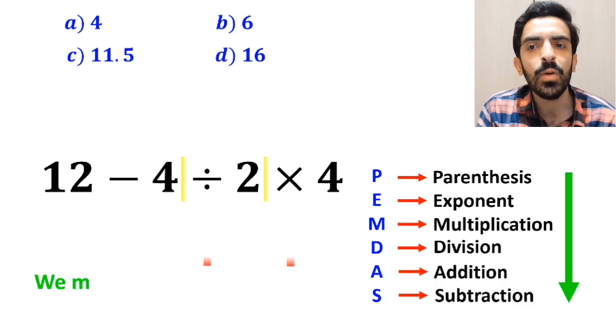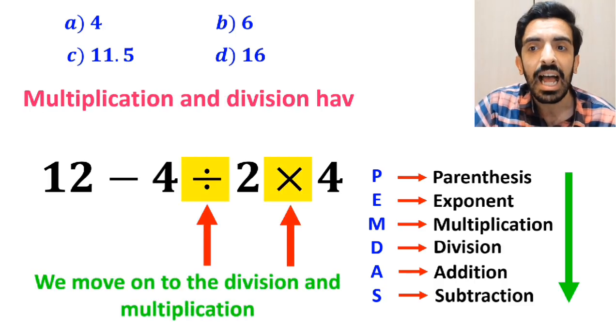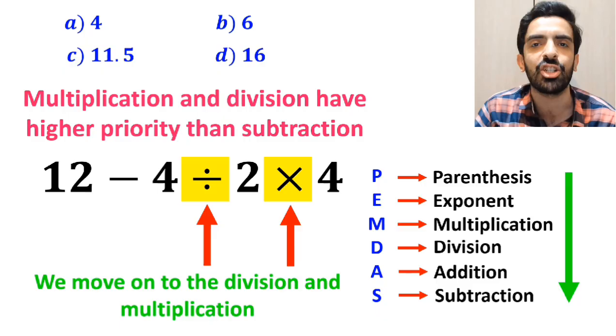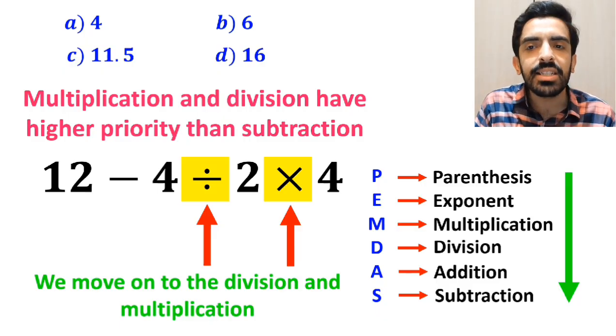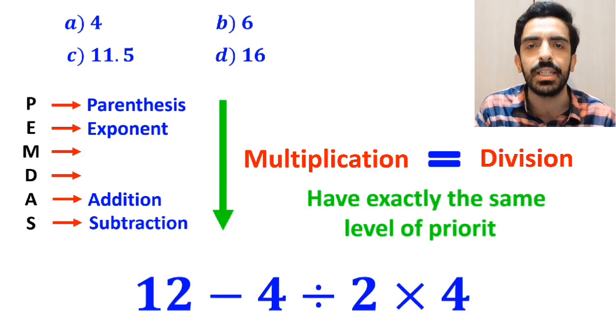In the next step, we move into the division and multiplication, because multiplication and division have higher priority than subtraction. However, it's very important to note that multiplication and division have exactly the same level of priority.